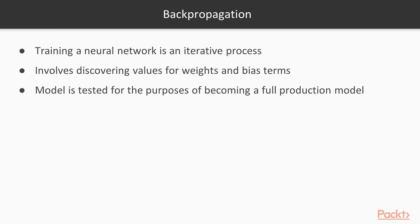In backpropagation, training a neural network involves discovering values for its weights and bias terms. These are used in conjunction with the input values to create outputs. After much iteration, the model is tested for the purposes of becoming a full production model that can be used to make predictions.